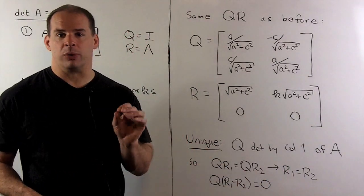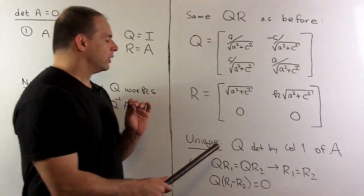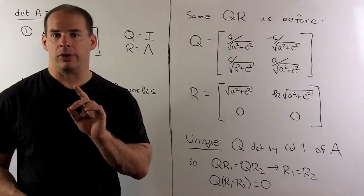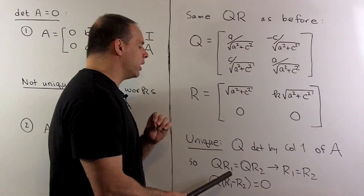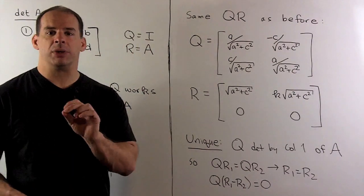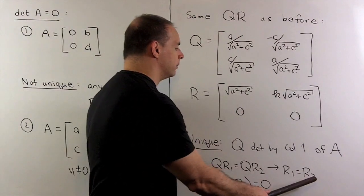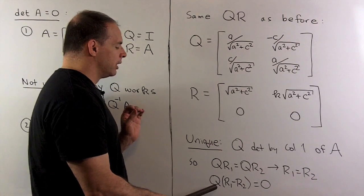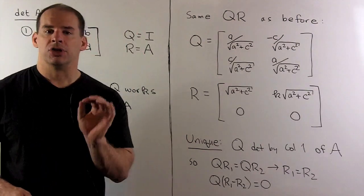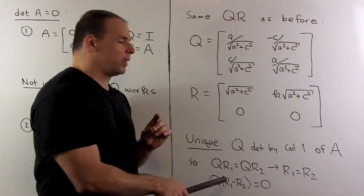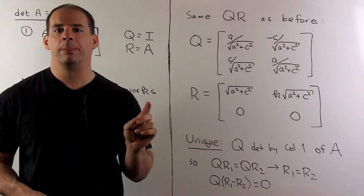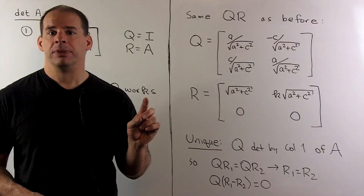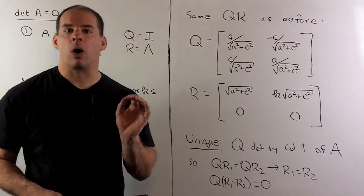This factorization is unique under our assumptions. The Q is unique because it's determined entirely by the first column. Supposing Q R1 equals Q R2 equals A, we push everything to one side and factor out Q, giving Q times (R1 minus R2) equals 0. Since Q is invertible, both column vectors of R1 minus R2 must be zero. Therefore R1 minus R2 equals 0, so R1 equals R2, confirming our factorization is unique.